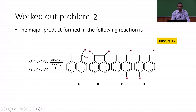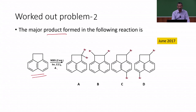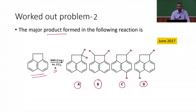In this workout problem, we are going to find out what is the major product formed in the following reaction. We have acenaphthylene reacted with two equivalents of NBS as a reagent under photochemical conditions. Carbon tetrachloride is the solvent used and the reaction is also heated. Four products A, B, C, and D are given. This question was asked in June 2017.